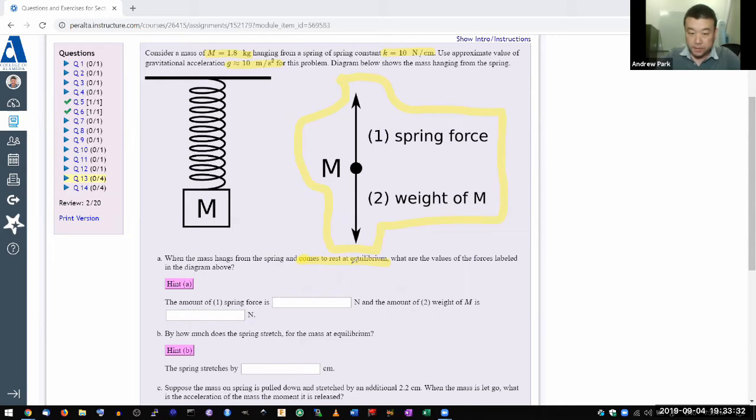You should understand from your reading what equilibrium means. Equilibrium means your net force is equal to zero. Through Newton's second law, that means acceleration is zero too. The sum of all these forces add up to zero at equilibrium.